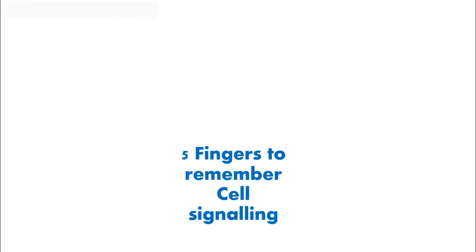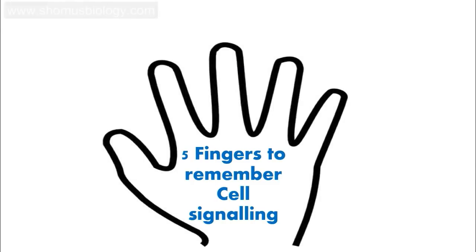It is nothing but thinking about five fingers — in this case your left hand. You have five fingers, and these five fingers represent five important parameters of a cell signaling pathway. Whenever you are reading a cell signaling pathway, these five parameters are the most important things to keep in mind.